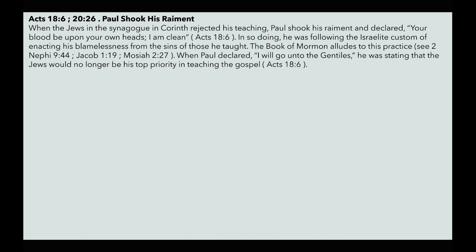Acts 18:6 and 20:26: Paul shook his raiment. When the Jews in the synagogue in Corinth rejected his teaching, Paul shook his raiment and declared, 'Your blood be upon your own heads; I am clean.' In so doing, he was following the Israelite custom of enacting his blamelessness from the sins of those he had taught. He then declared that he would go into the Gentiles, stating that the Jews would no longer be his top priority in teaching the gospel. This shaking of the raiment symbolized: 'I am not responsible for your false teachings, as I have taught you.' References include 2 Nephi 9:44, Jacob 1:19, and Mosiah 2:27.